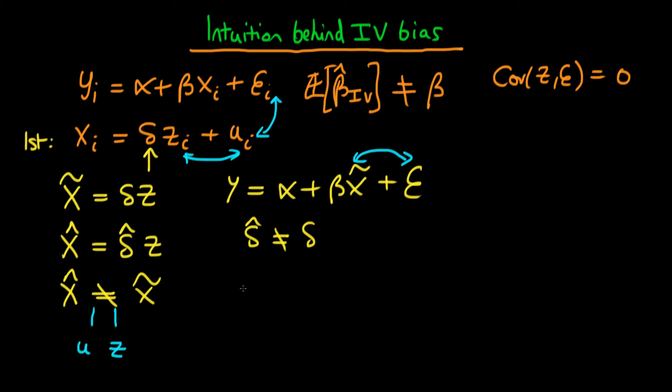we can think about x hat as being a function mostly of z because it's equal to delta hat times z. So it's mainly a function of z. But because of this sampling error in u, we can also write that x hat is to a lesser extent determined by u. So let me just repeat that. x hat is mainly determined by z, but it also has a little bit of dependence on u.